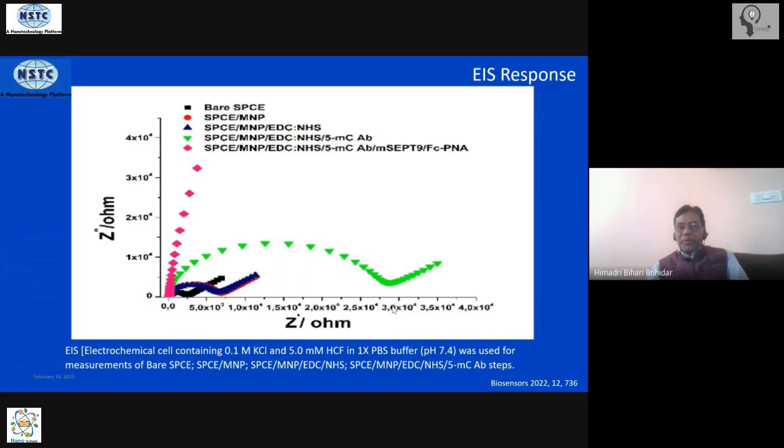So therefore your charge transfer resistance will be very very high. Nearly expected and this is what you see. After attaching the antibody to it, the charge transfer resistance has become very high compared to the bare electrode which was here earlier.